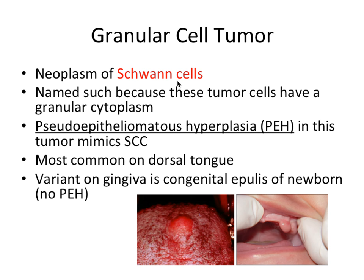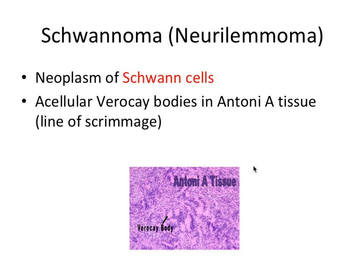Next we have the Schwannoma, also known as a neurilemmoma. The Schwannoma is, unsurprisingly, a neoplasm of Schwann cells. Under the microscope it has acellular Verocay bodies in Antoni A tissue. It forms a pattern resembling a line of scrimmage in American football — two lines you can see in the histology, which is how someone described it.